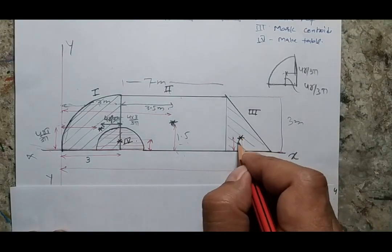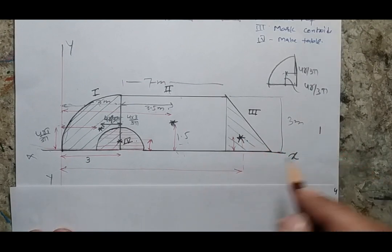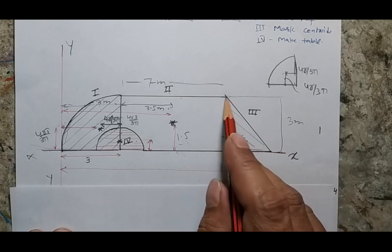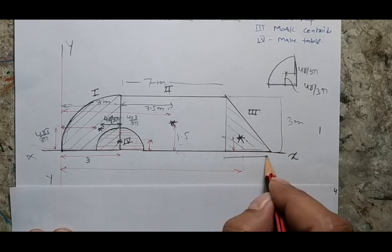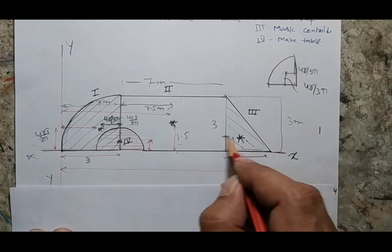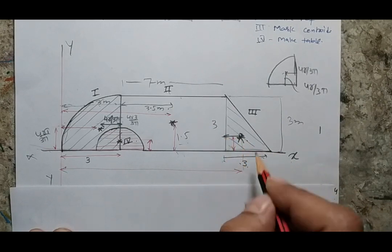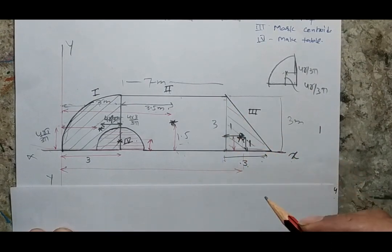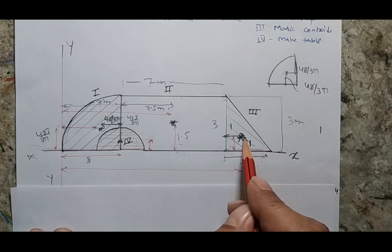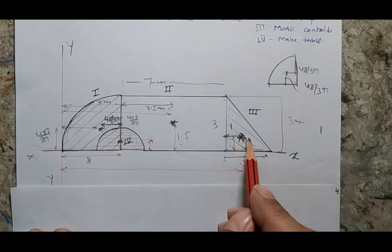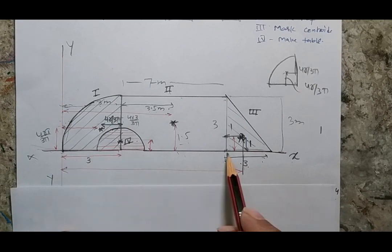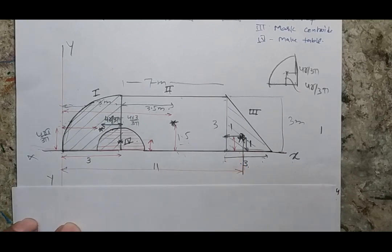If I mark the centroid of the triangle, in the case of a triangle the centroid is at one-third from the base and one-third from the perpendicular side. The total distances are given as 3 and 3, so each one-third distance is 1. But the position with respect to the reference is the total distance, which is 3 plus 7 equals 10, plus 1 equals 11. So this total distance is 11.